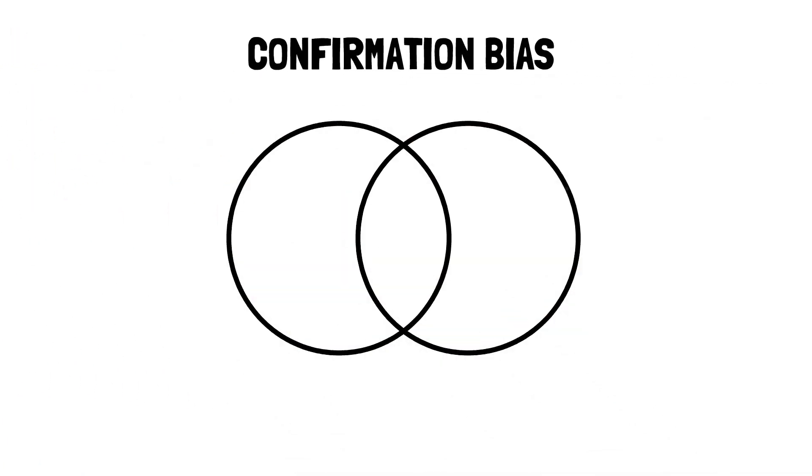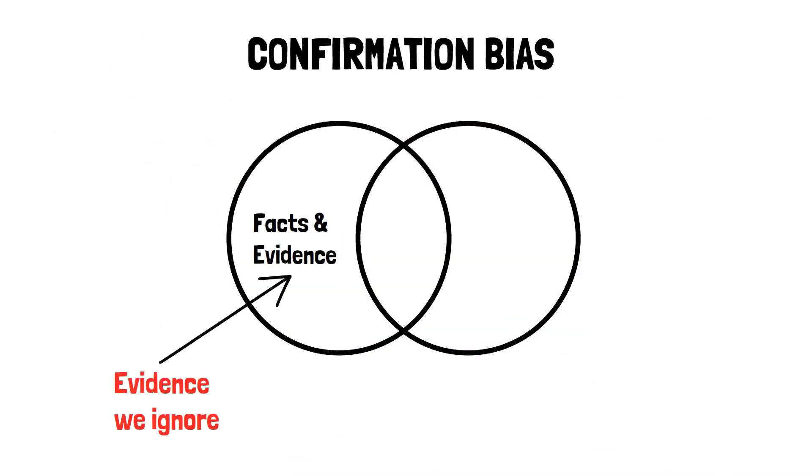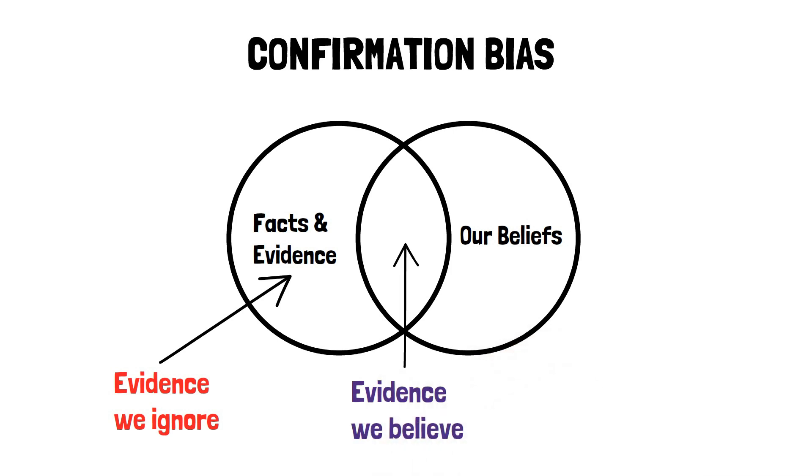Confirmation bias occurs when a person only considers evidence supporting their pre-existing beliefs, and ignores evidence contradicting them.